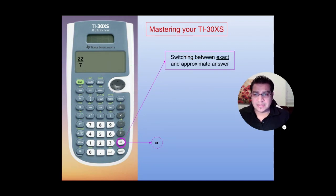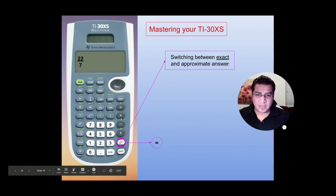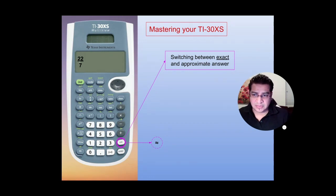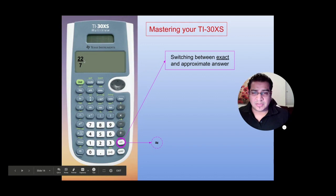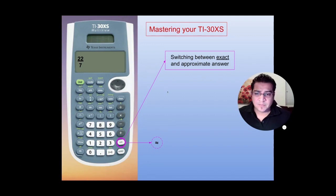Another important key will be the approximation key, which is the double arrows. That is the key that allows you to switch between exact and approximate answer. So like if I type 22 over 7, and I press enter, I will get the same 22 over 7. But if you want an approximation, you can actually press that key, and when you do that, you'll get 3.14, which is very close to pi.